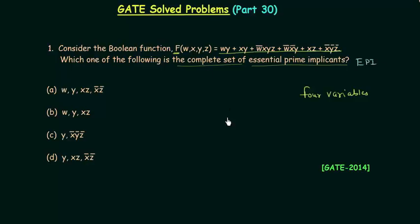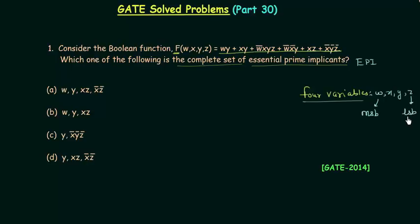I will draw a 16-cell K-map to find out essential prime implicants. We are making a 16-cell K-map because we have four variables w, x, y, and z, in which w is the MSB (most significant bit) and z is the LSB (least significant bit).